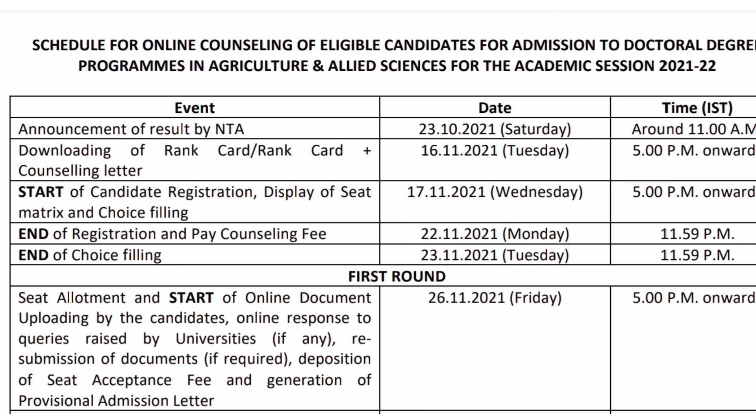The end of choice filling will be on 23rd of November 2021. These are the important dates for candidate registration and choice filling. After choice filling, we move on to the first round of allotment.